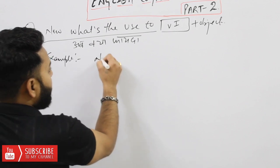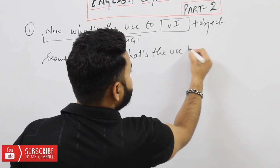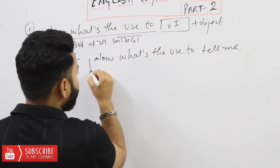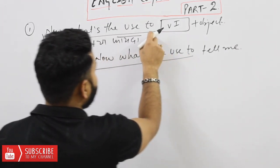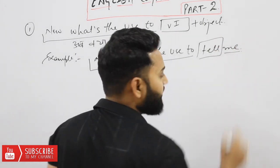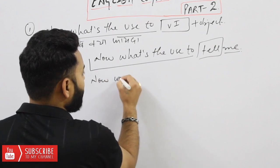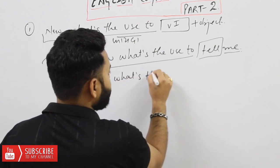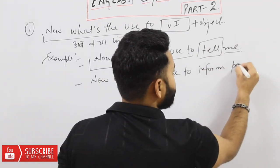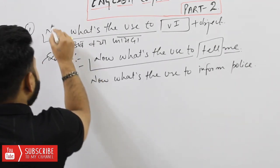For example: 'What's the use to tell me?' — one more example: 'Now what's the use to inform police?' — meaning: अब police को inform करने का क्या फायदा? So this is how you get sentences of this type.